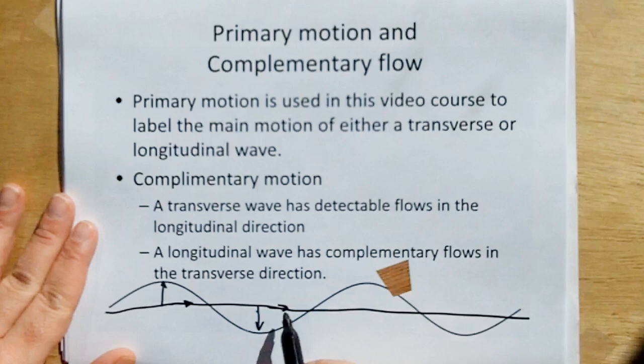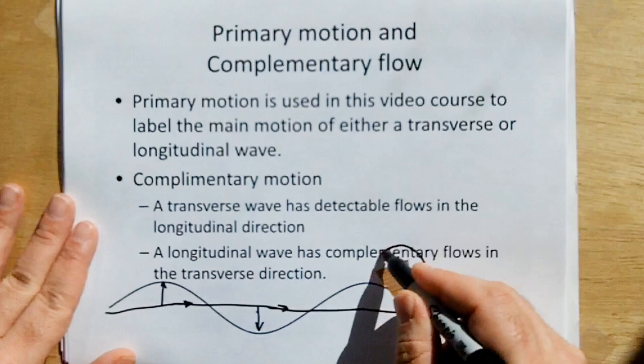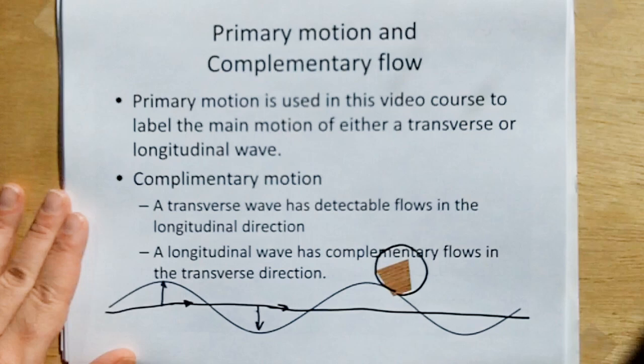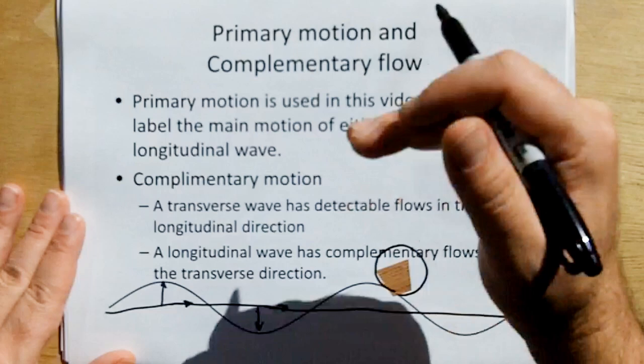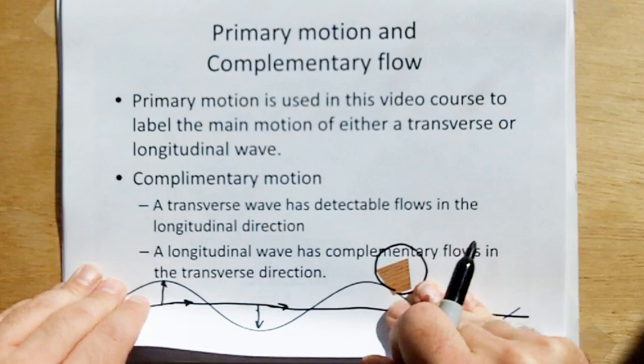So these two motions together are the reason why the cork or the confetti that's sitting on the surface of the water waves actually goes in an elliptical or even circular path as the water wave progresses. There's no net motion of the medium, but there is, just as there's transverse vibration of the medium, there's also longitudinal vibration of the medium. And that longitudinal and a transverse wave is what I call the complementary motion.